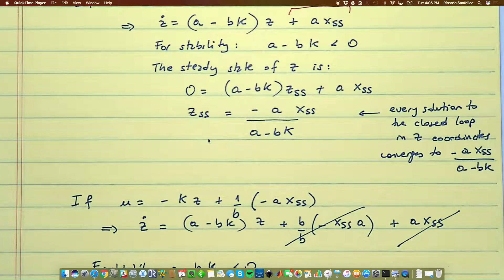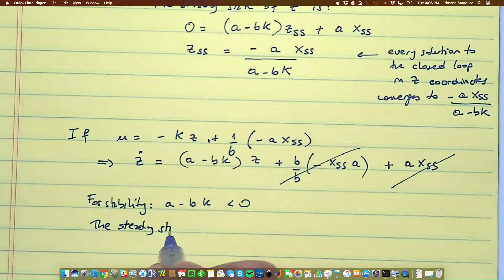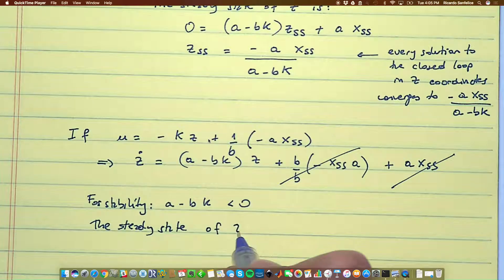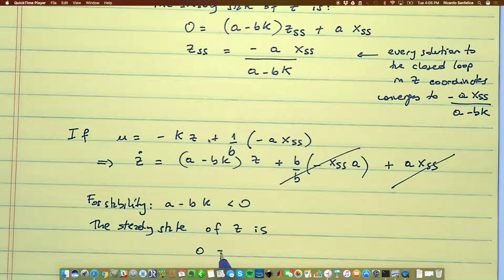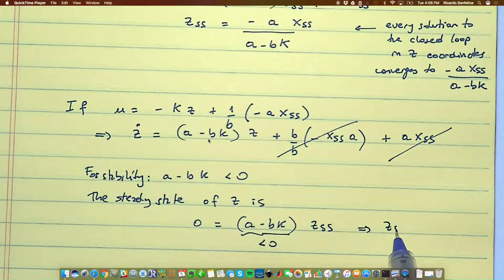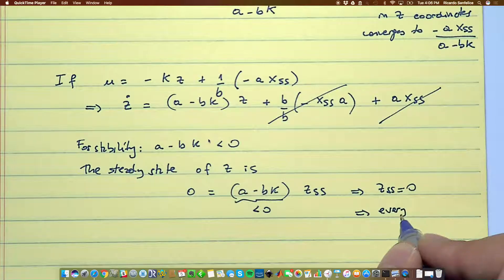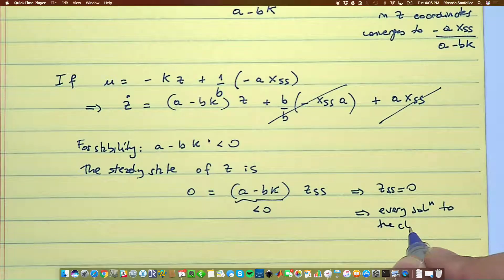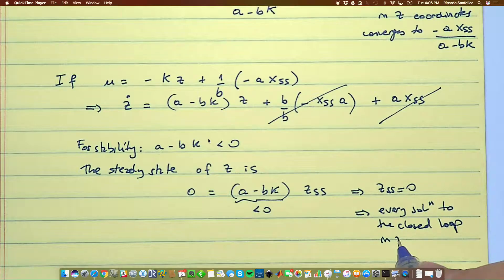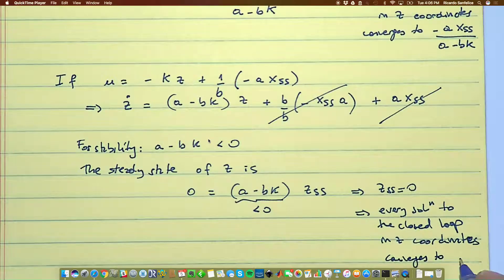And now I will design a minus b k less than 0 for stability. And then the steady state of z is 0 equal to a minus b k times z_ss. And this being less than 0 implies that z_ss is equal to 0. Therefore, every solution to the closed loop in z coordinates converges to 0.